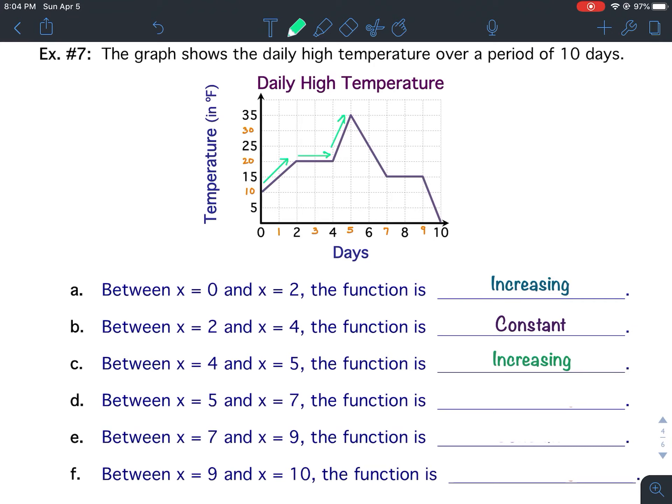From x equals 5 to x equals 7. The line is going downward, and if it's going downward, that means it is decreasing. The function is decreasing between x equals 5 and x equals 7.